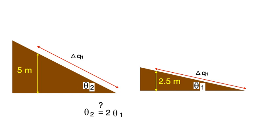By doubling the height, did we double the angle theta? Well, to be precise, that's not quite true. If, as we said, we hold delta q sub 1 constant, doubling the height doubles the sine of theta.